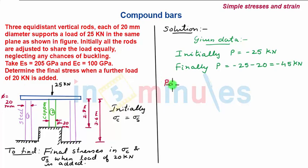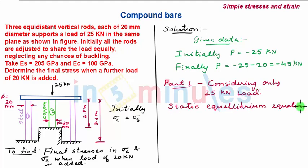We first consider part one of the problem considering only 25kN load. We first apply the static equilibrium equation which is the force balance equation. Now since we have two steel rods of equal diameter and length, the load shared by both the steel rods will be same. So let the load shared by two steel rods be 2PS and the load shared by copper be PC and this is equal to -25kN.